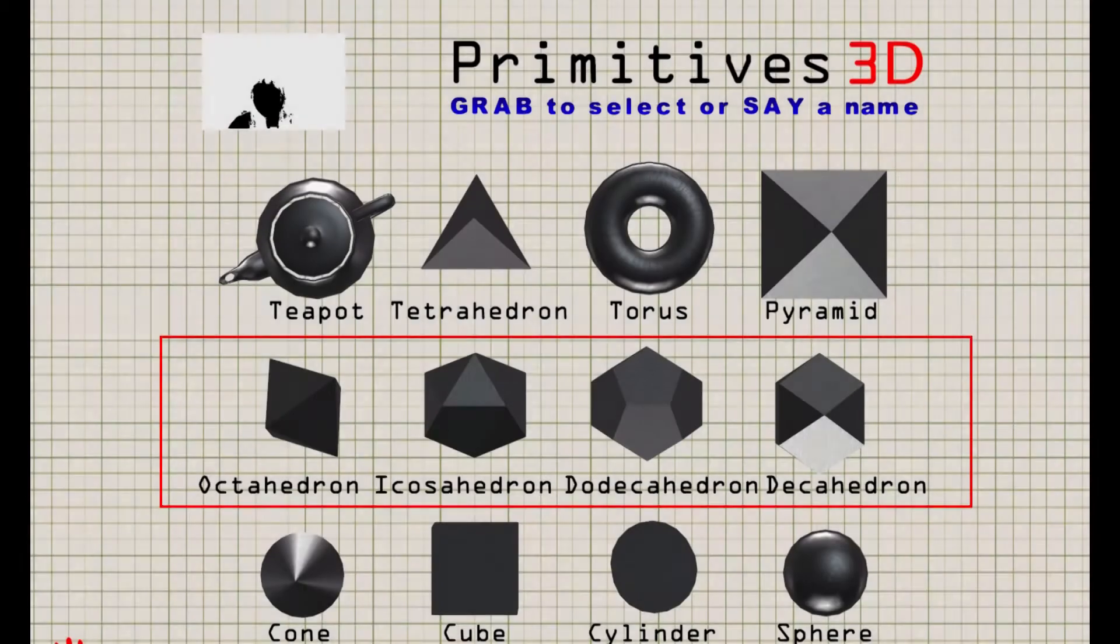For Polyhedra in Row 2, the Wolfram Alpha API is used to pull some basic data about its geometric properties. Speak the word properties to load each one.